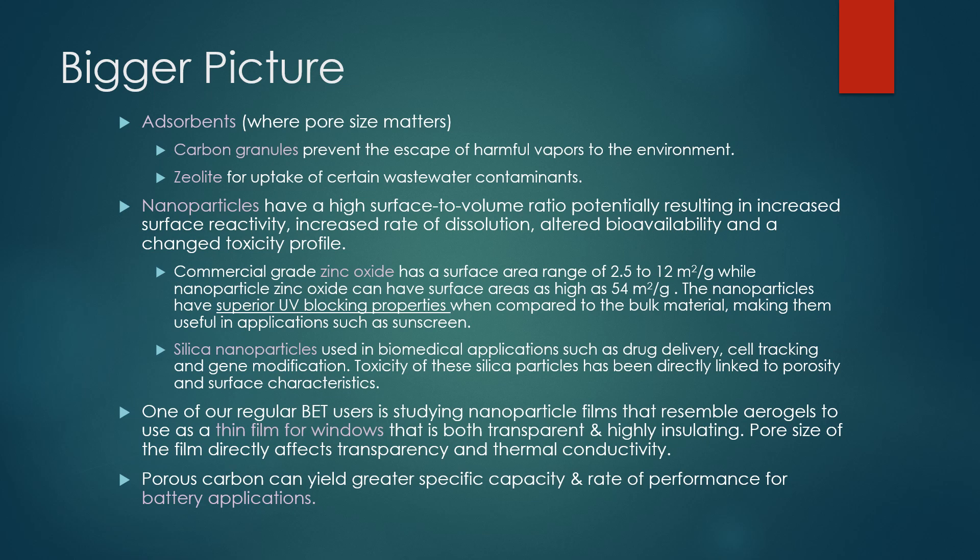If you look at zinc oxide, commercial grade has a surface area of like 2.5 to 12 square meters per gram, while compared to nanoparticle zinc oxide you have surface areas as high as 54 square meters per gram. That just shows you how much more surface area you're working with when you have a nanoparticle versus commercial grade. Obviously more surface area allows for more types of properties - in this case, superior UV blocking properties. They use these in sunscreens.